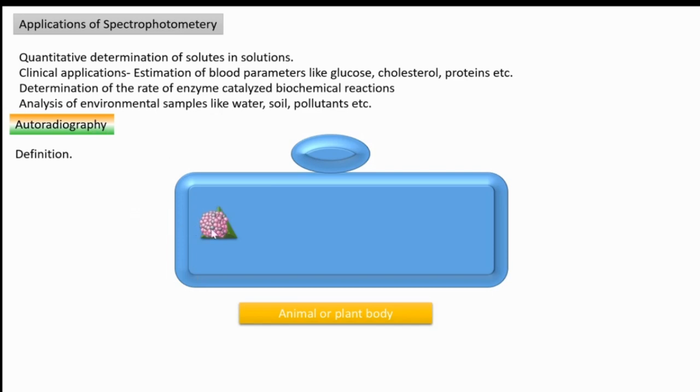That radioactive material is incorporated into the material that we need to trace and we can follow the path of that material, which all places that material is moving, what is its fate, all those things we can understand. That is the purpose of autoradiography. In a definition way, we can say autoradiography is a technique which uses several naturally occurring radioactive isotopes to trace the path by which materials move from one place to another within plants or in animal cells.